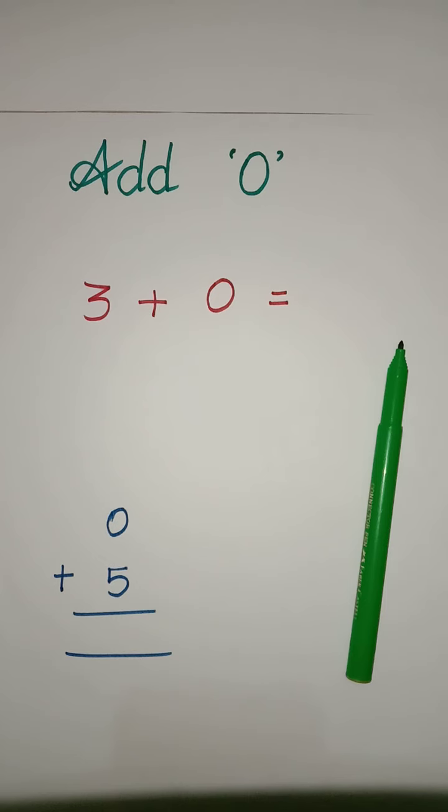What number is it? 3. So, 3 dots. 1, 2, 3. Plus, what number is it? 0. 0 means no value. So, 3 plus 0 equals... Answer is 3.